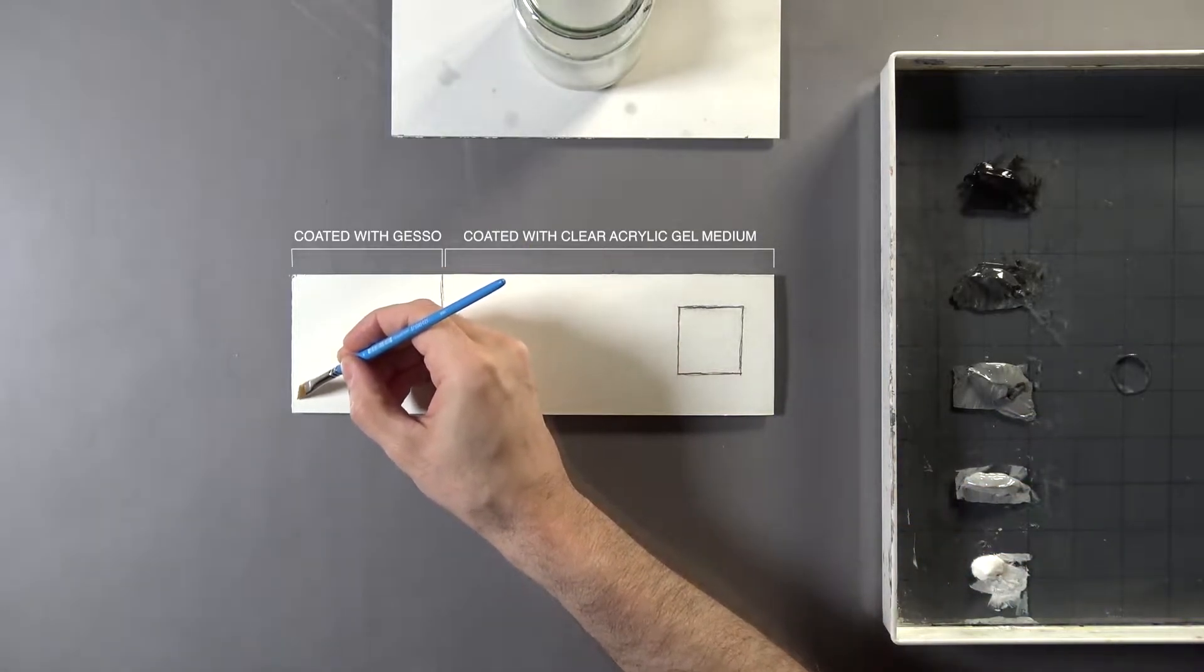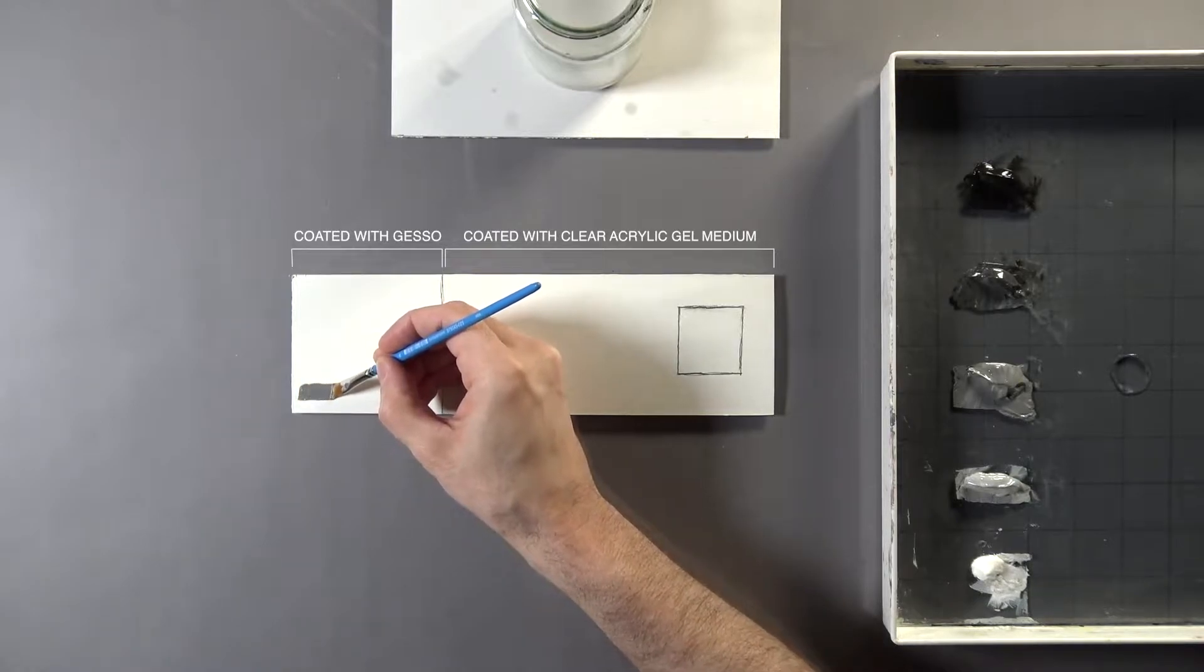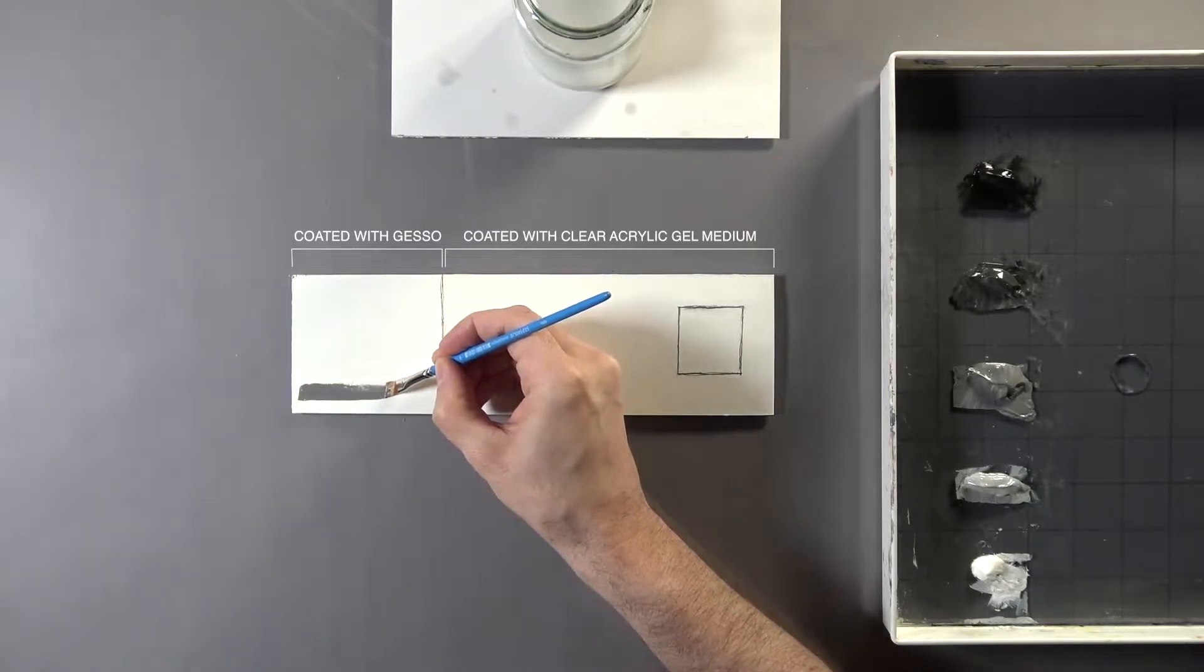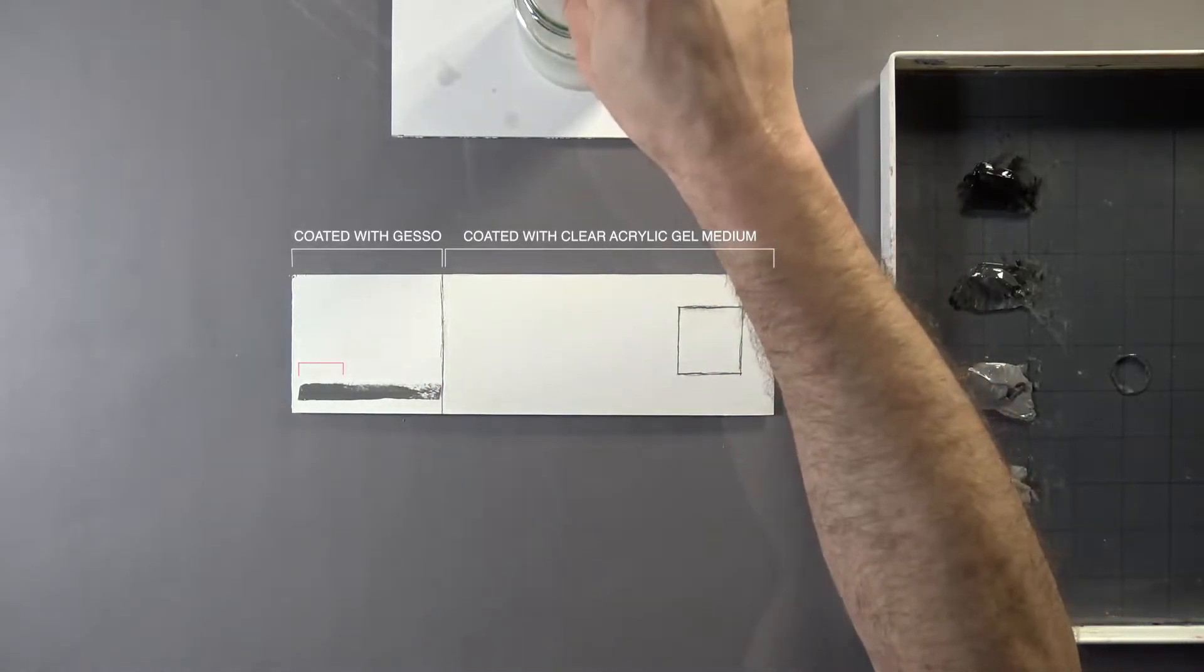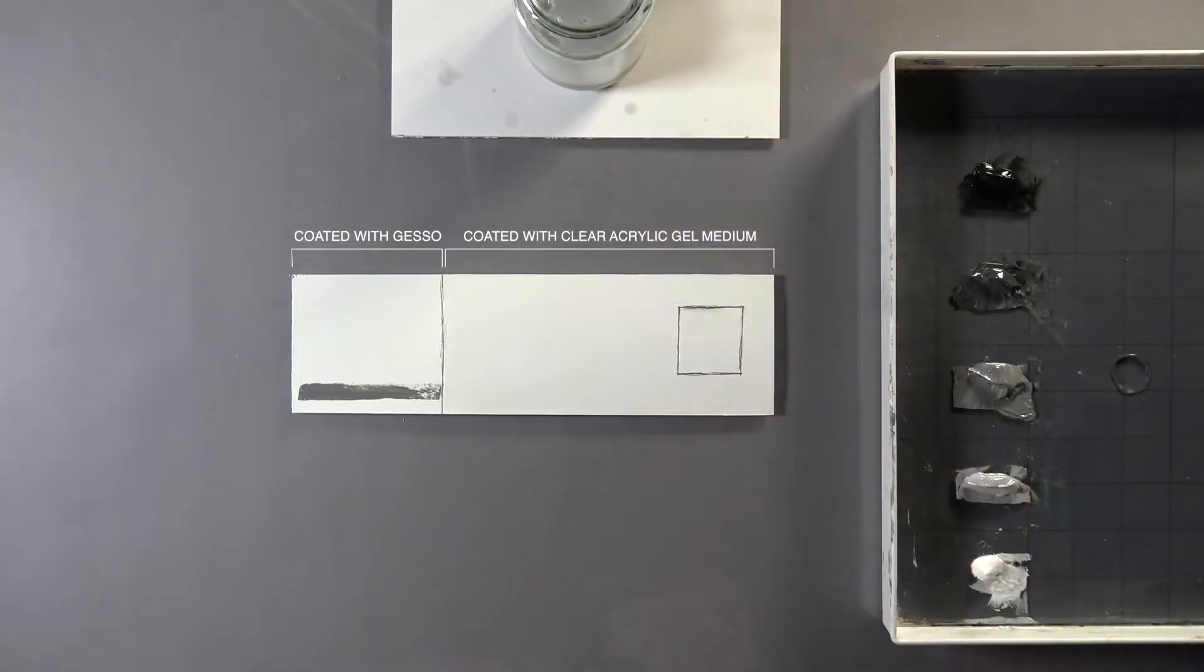First, I'm going to paint a line on the gessoed side of the illustration board. Notice how the paint application is only solid for this long. Then it starts to appear inconsistent and increasingly sparse. I'll just quickly clear my brush off in some water.